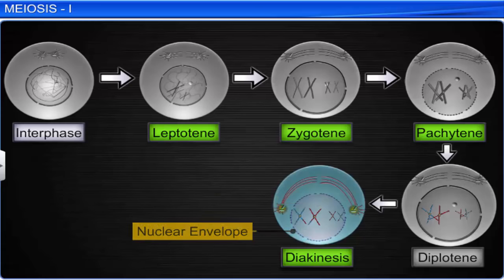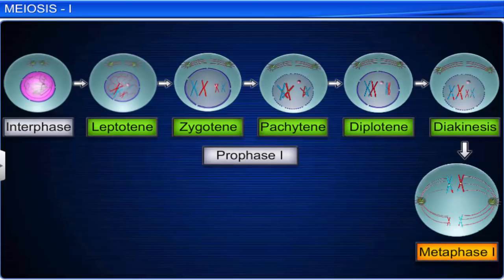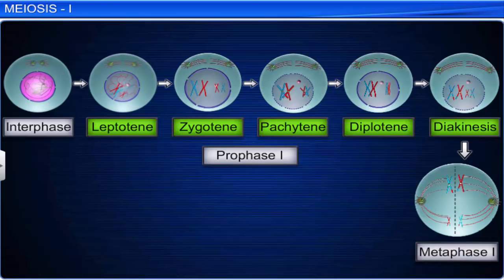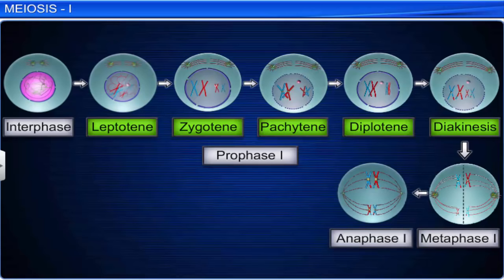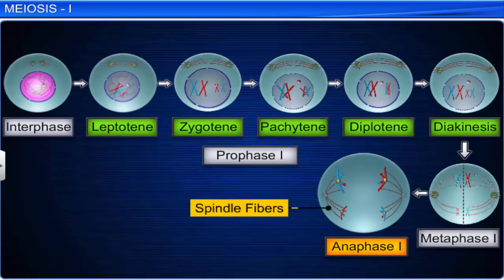In metaphase 1, the chromosomes line up along the equatorial plate of the cell, and the spindle fibers get attached to the kinetochores of the homologous chromosomes. Metaphase 1 is followed by anaphase 1. In this phase, the chromosomes pull apart from each other along the spindle fibers and move to opposite ends of the cell. The chromosomes are still double-stranded, with two sister chromatids connected at their centromeres.